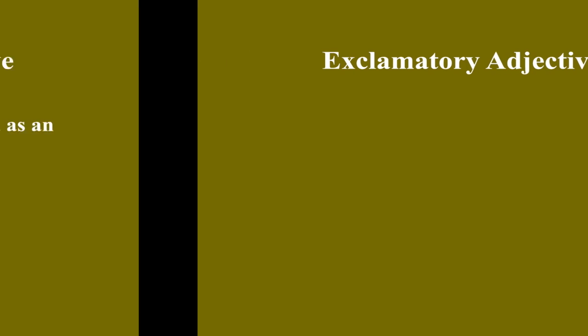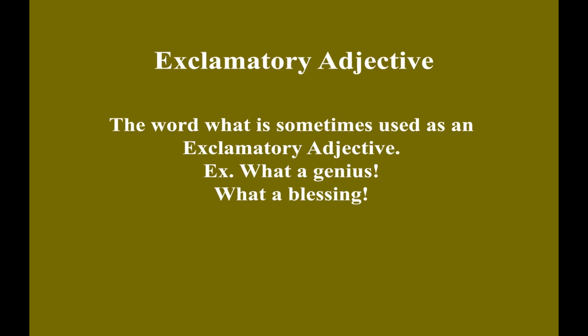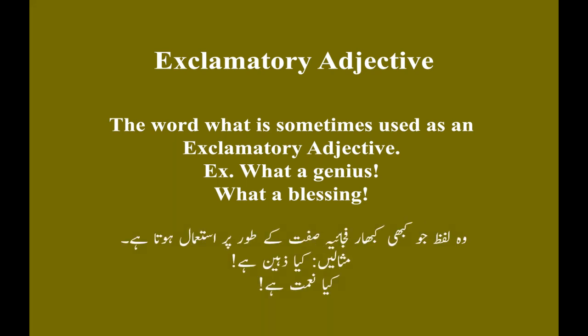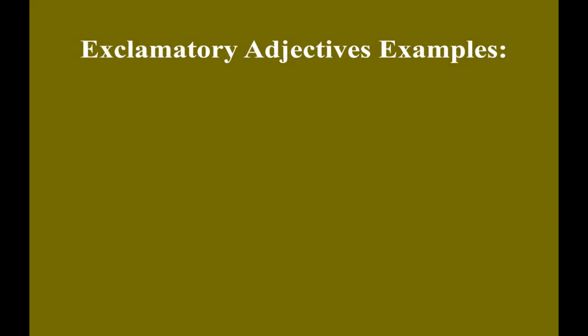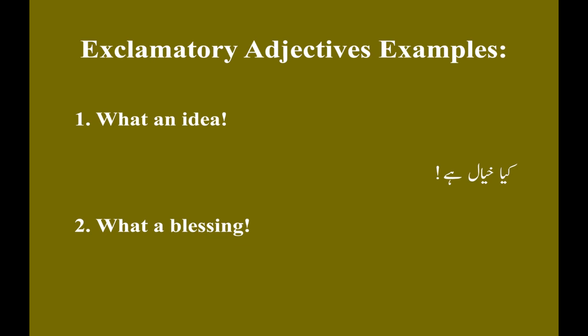Exclamatory adjective. The word 'what' is sometimes used as an exclamatory adjective. Examples: What a genius! What a blessing! Woh lafz jo kabhi kabhar fajaiya sift ke toor per istaymal hota hai. Musali: Kya zahin hai! Kya naimat hai! Example number one: What an idea! Kya khayaal hai! Example number two: What a blessing! Kya naimat hai!